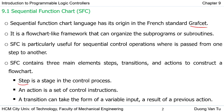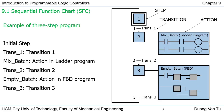The final element is the transition — the condition to switch from the current step to the next step. To switch from the current step to the next step, we have to get some variable input, for example a sensor or input contact connected to the input module of the PLC.